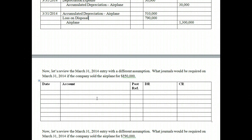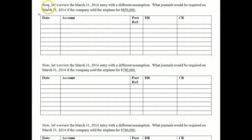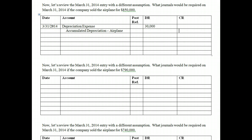Now let's look at what happens when we sell the asset. Let's review the March 31st, 2014 entry with a different assumption. What journals would be required if the company sold the airplane for $850,000? Remember, as of December 31st, 2013 we did our last depreciation recording. So the first thing we must always do is make sure depreciation is up to date. On March 31st, we record the additional accumulated depreciation of $30,000 — that's $120,000 times three months.